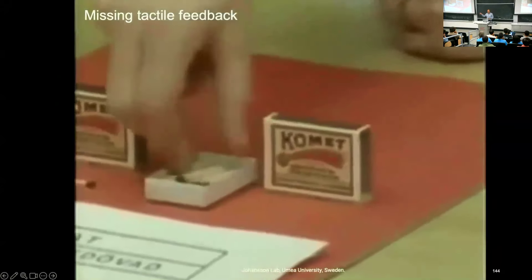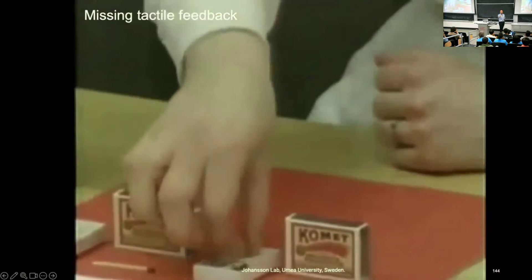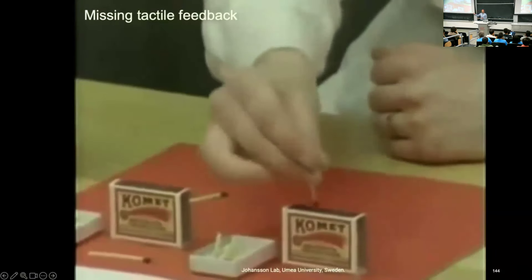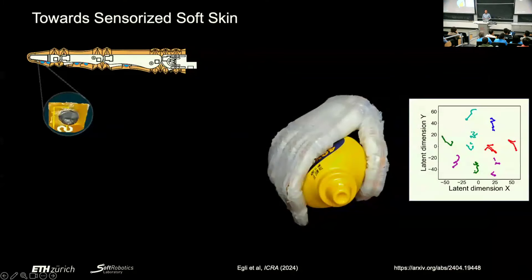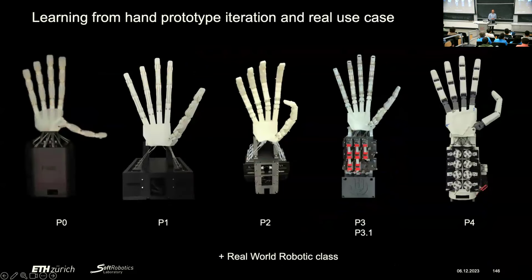There is also a company I co-founded that is making a manipulation system for sorting and cleaning bottles from containers. One major missing capability is tactile feedback. A study from Johansson's lab in Sweden showed that if you numb your fingertips, you have a very hard time doing anything dexterous. Our robotic hands currently don't have this. Janus in our group started investigating putting a skin on the hand with sensors underneath to identify objects. We're still a long way from fine tactile sensing.